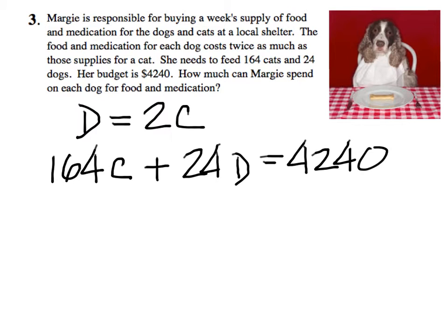How much can Margie spend on each dog for food and medication? Notice that D equals 2C—there's an equation—and you have another equation below it. You can solve systems of equations by elimination or by substitution.